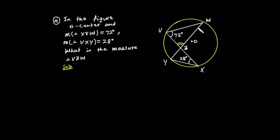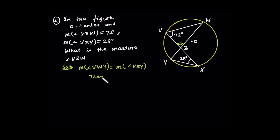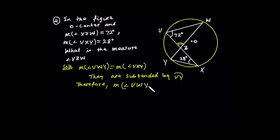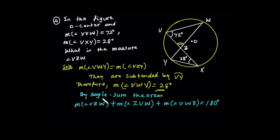So let's find angle VZW. Angle VZW is subtended by arc VY. Because angle VZW and angle VXY are both subtended by the same arc VY, the measure of angle VWY equals the measure of angle VXY. Therefore, the measure of angle VWY equals 28 degrees. The sum of the three angles must equal 180 degrees, by the angle sum theorem.